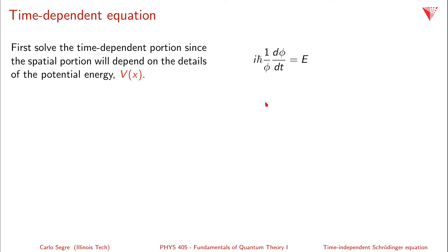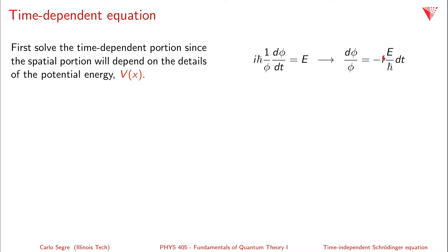We're going to solve the time-dependent portion first, because the spatial portion will depend on the details of the potential energy V of x — that's where all the physics lies. We have i h-bar (1/φ)(dφ/dt) equals E, and we can rewrite that as dφ/φ equals minus iE over h-bar dt. We multiply by dt and divide by i h-bar, bringing the i up on top to get a minus i.